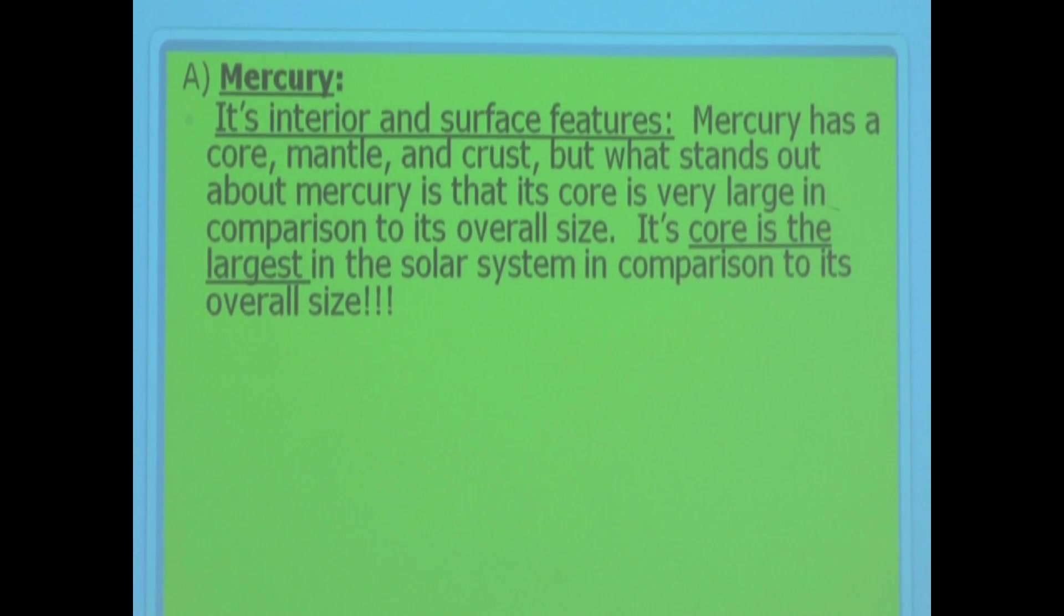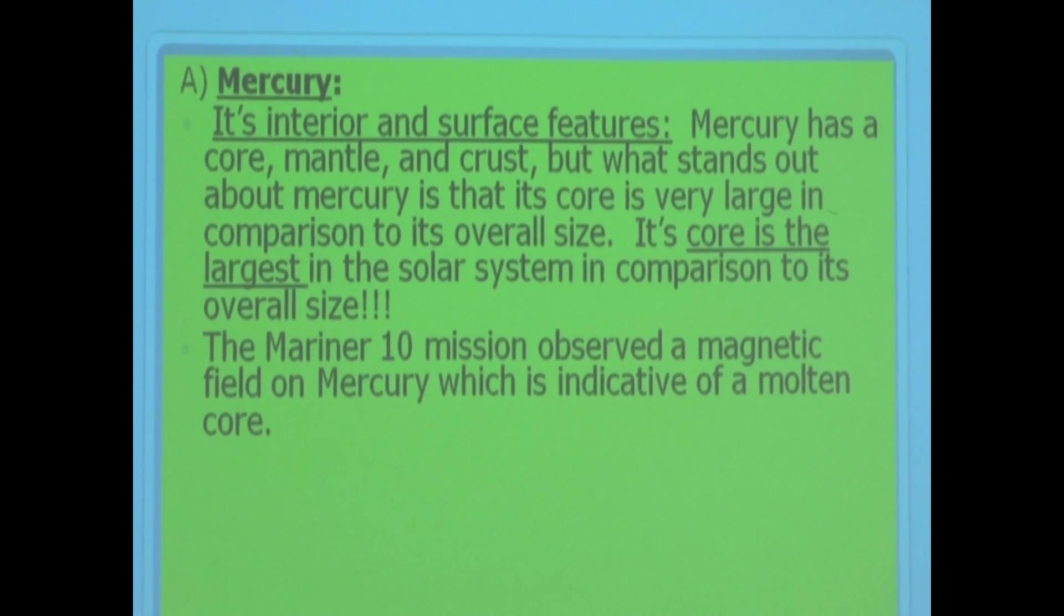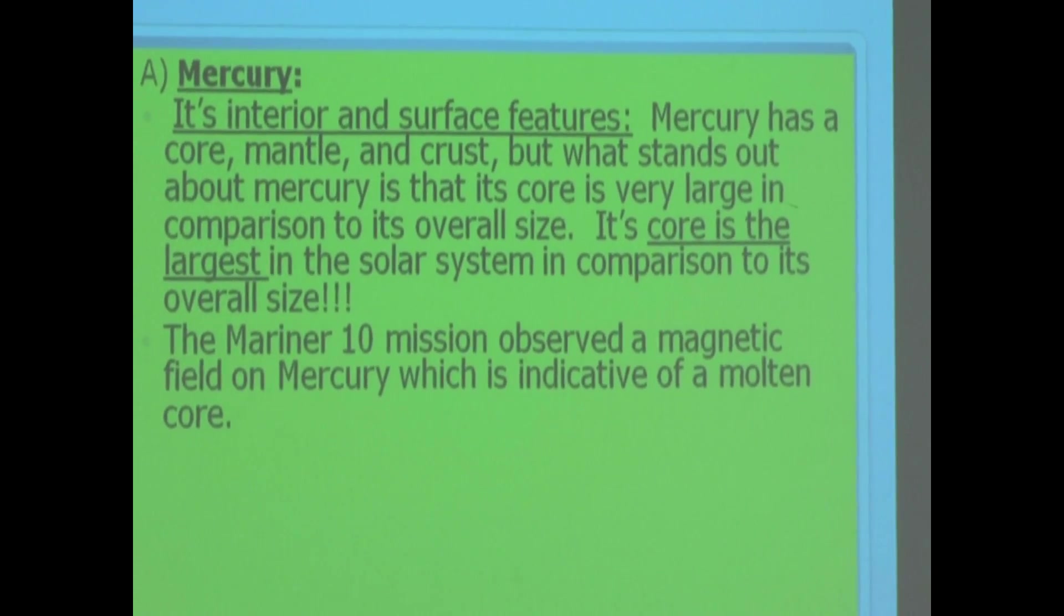Its core is the largest in the solar system in comparison to its overall size. The Mariner 10 mission observed a magnetic field on Mercury, which is indicative of a molten core.